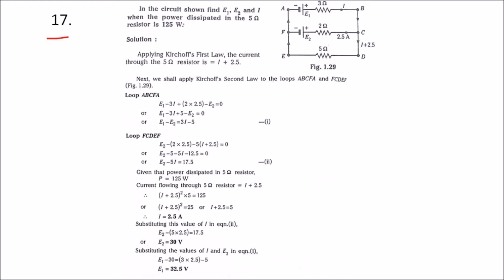Problem number 17. In this problem, they have given a circuit where we have to find E1, E2, and I. They have also given the power dissipated in the 5 ohm resistance, that is 125 watts.